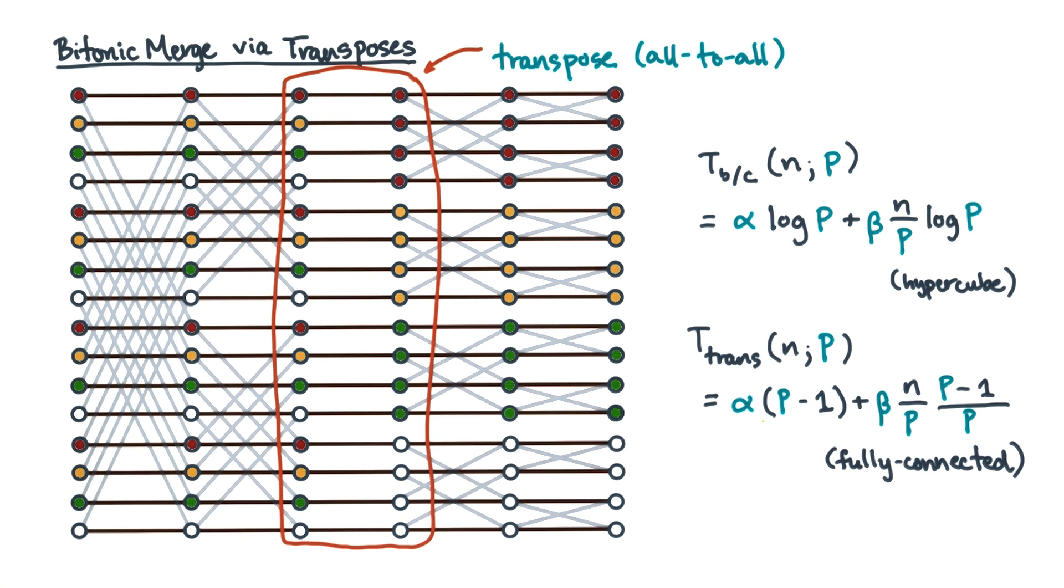In practice, it's typically very hard for the block or cyclic schemes to actually beat the transpose schemes for typical values of n over p. And that's true even given the much stronger assumption of a fully connected network versus a hypercube. Can you think of any reasons why that might be true?